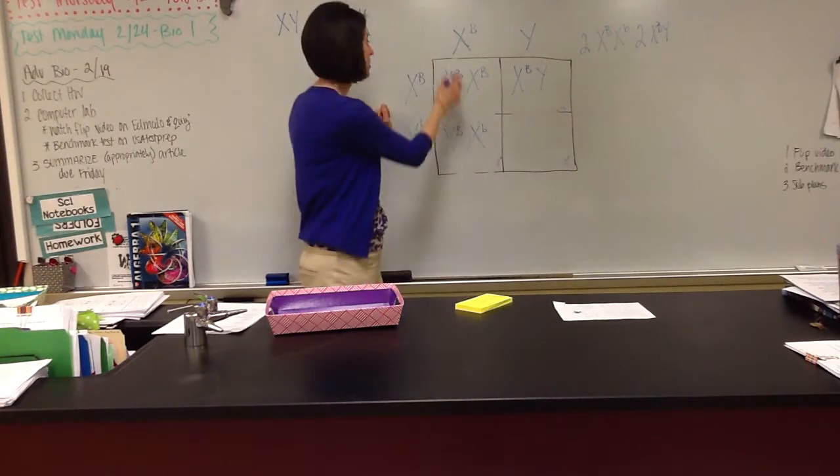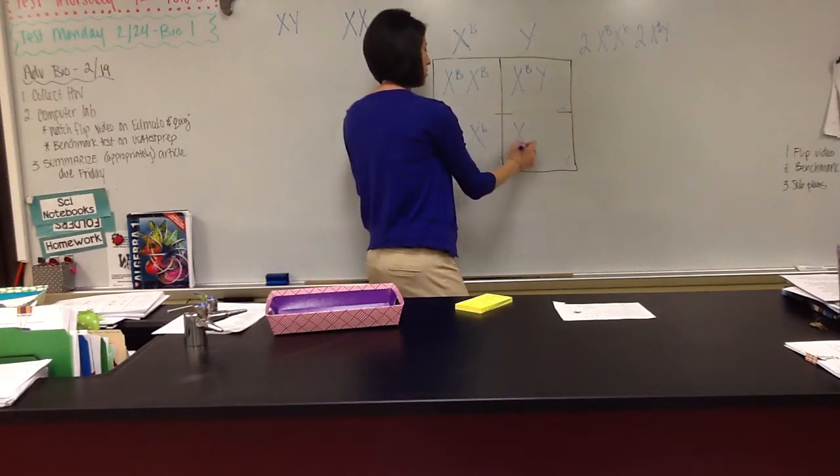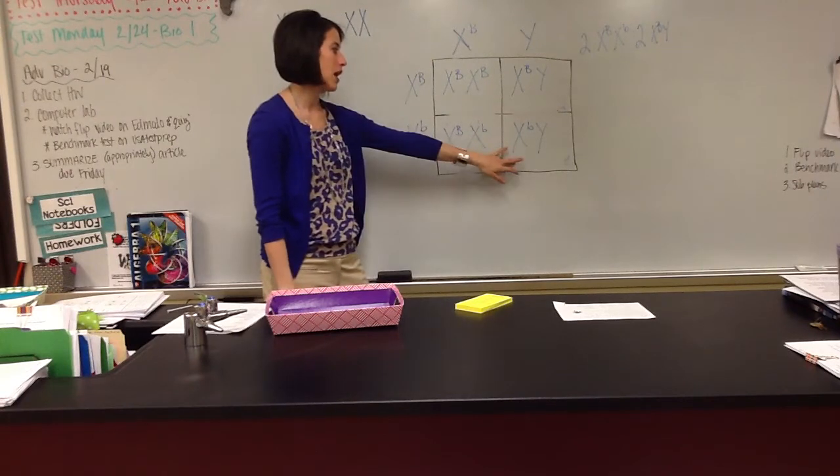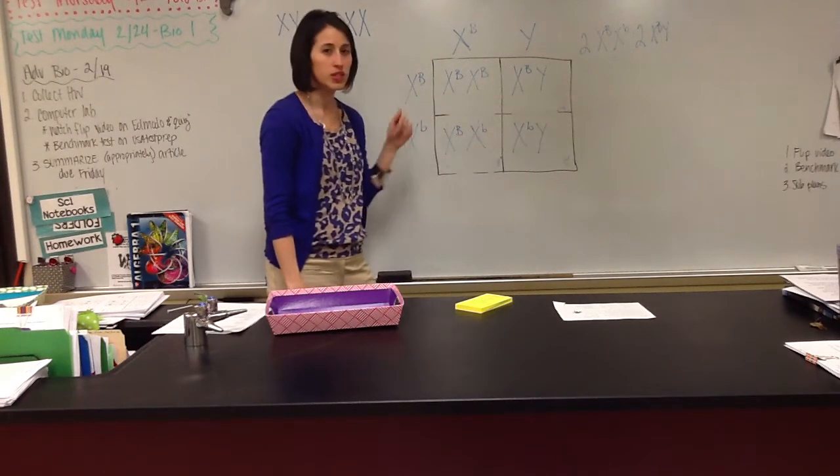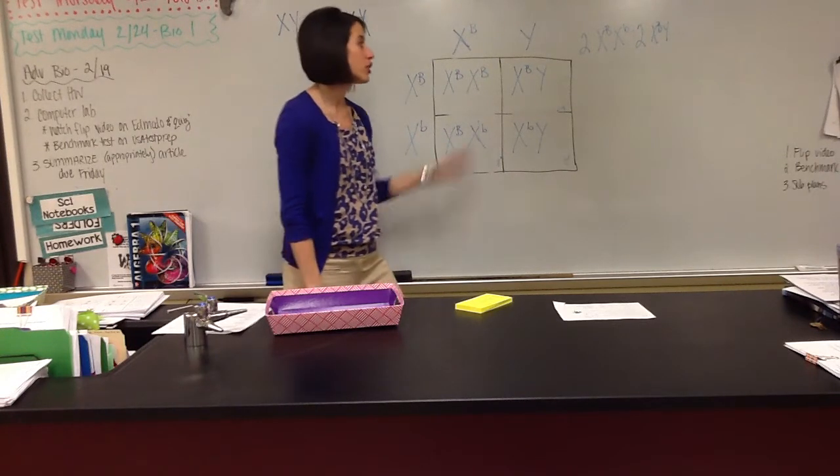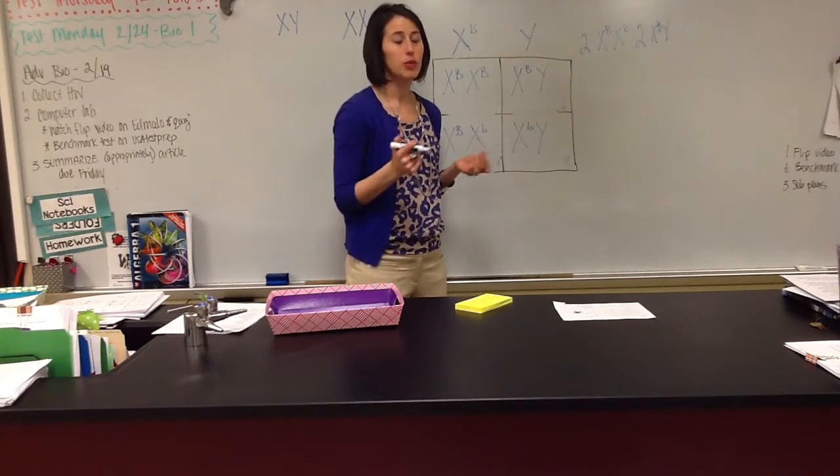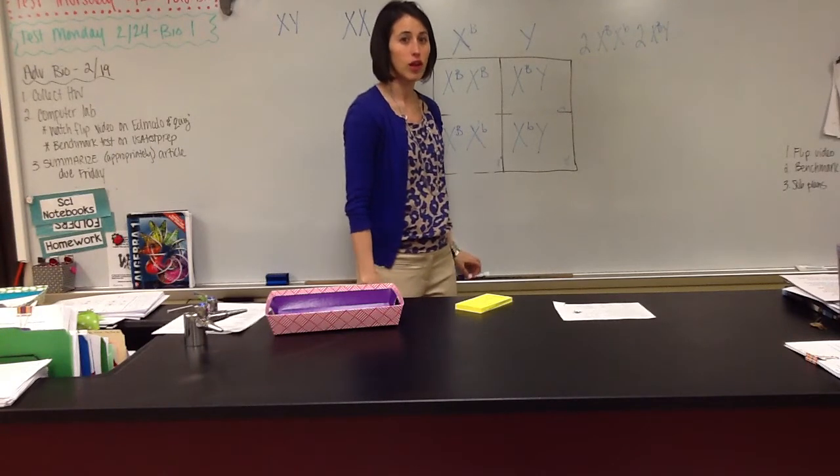Unaffected male, because this one gets that dominant gene, but this little guy is going to be colorblind. So she has a 25% chance of having a child that has that colorblind gene. Or if you're just looking at boys, she has a 50-50 chance, 50% chance of her little guys being colorblind.